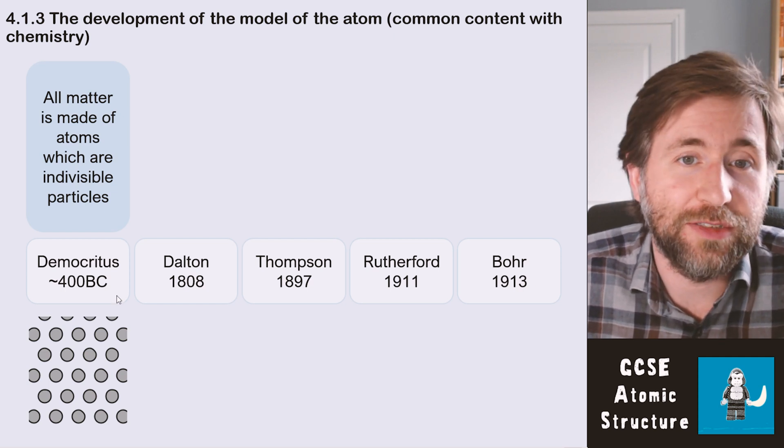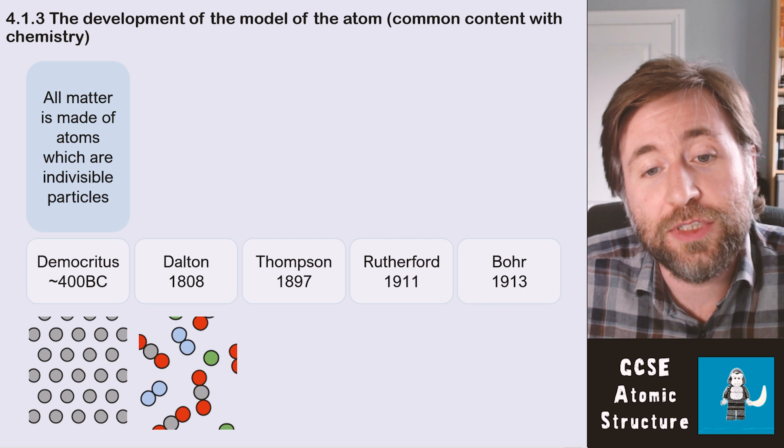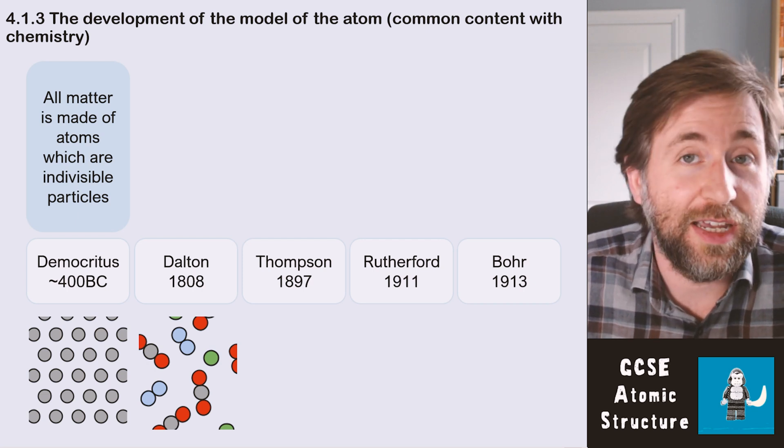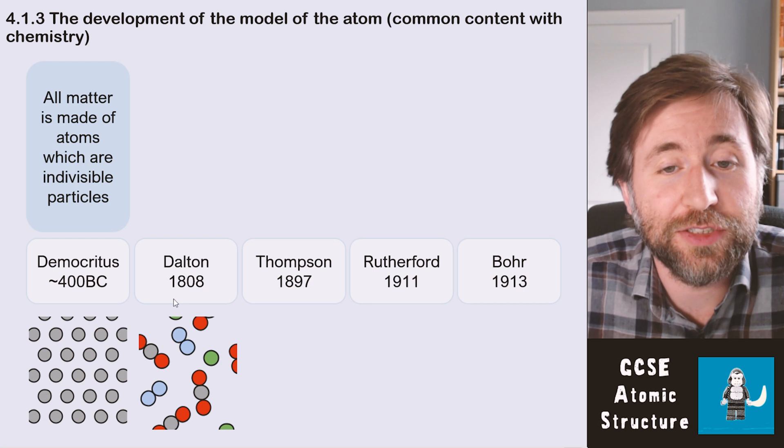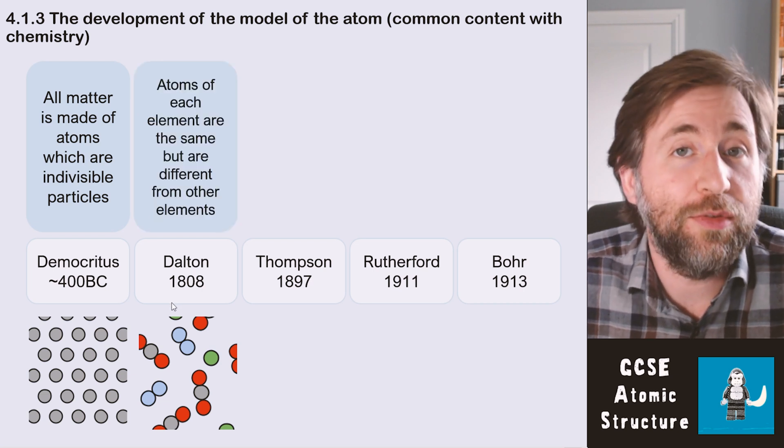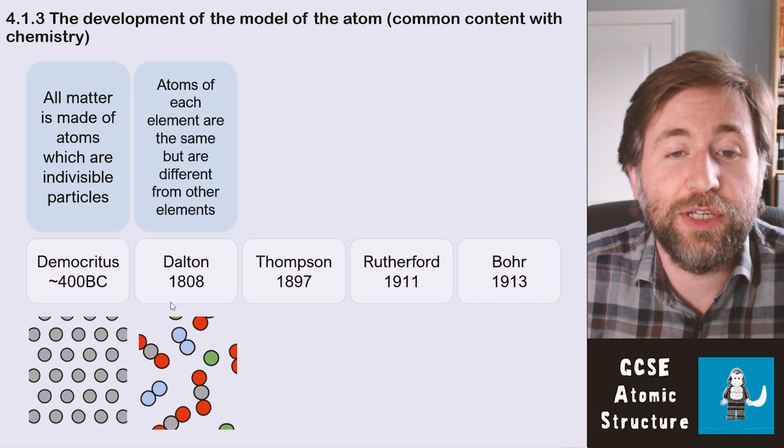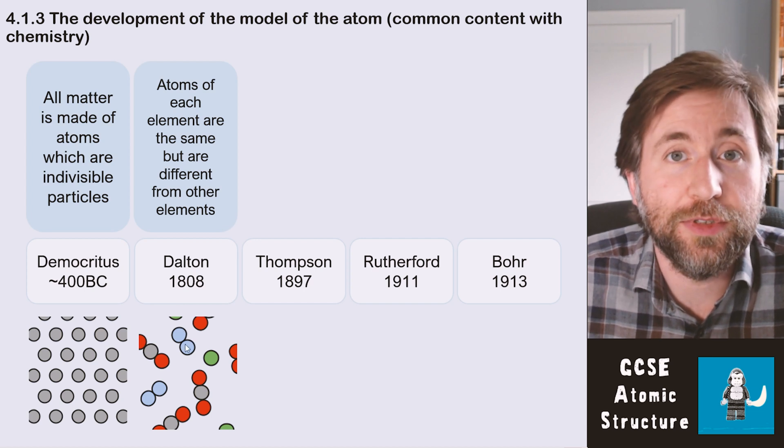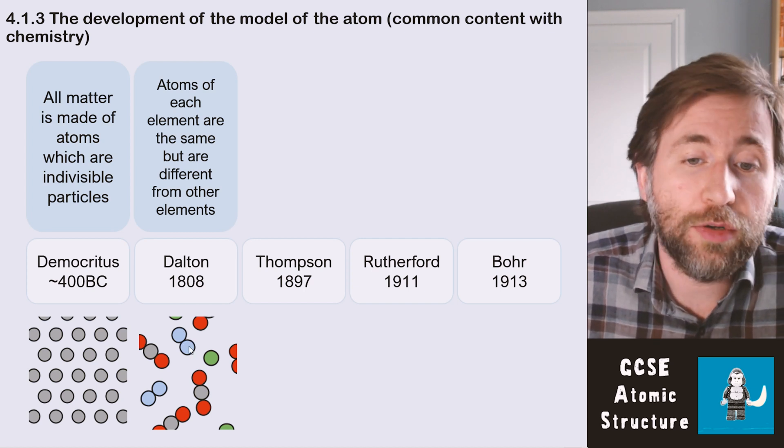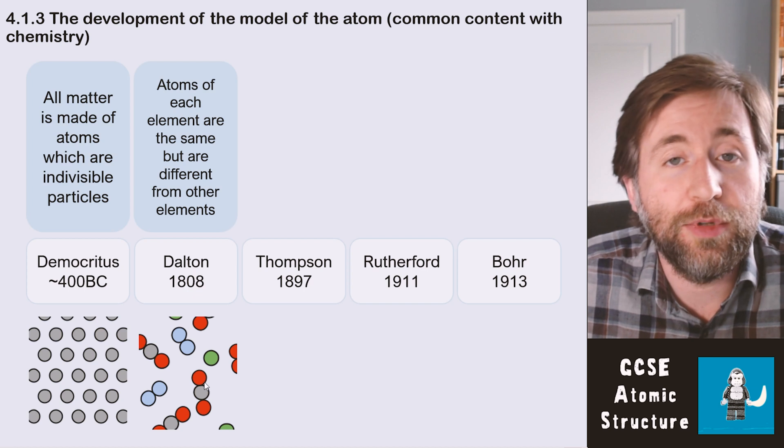Then John Dalton did some work on chemistry in the 1800s. We've gone a long way where that model hasn't changed. He said that all atoms were indivisible, they couldn't be broken down, but different elements were different atoms—so oxygen was one type of atom, carbon was another type of atom, and so on. But basically they had no structure; they were fundamental, they were unbreakable.